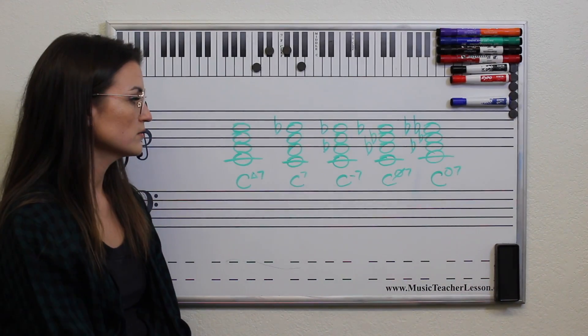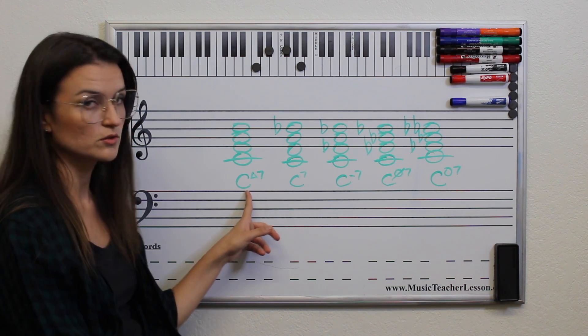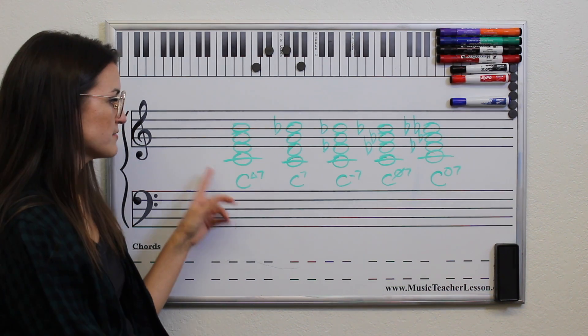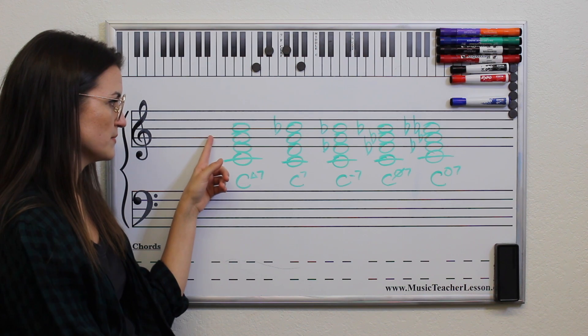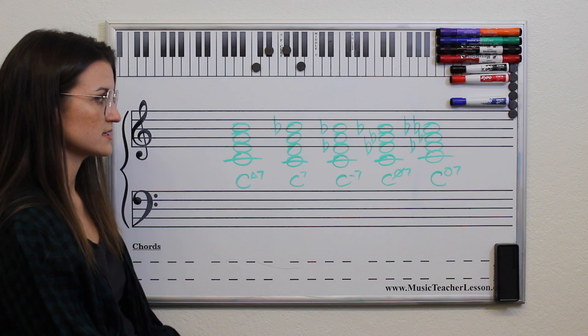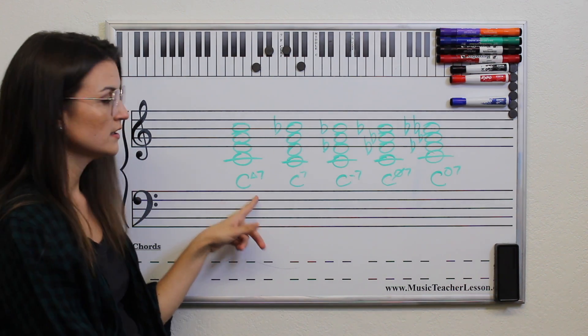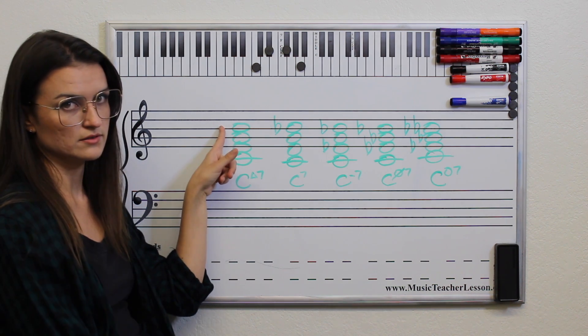Okay, so in order for you to be able to play 7th chords on any note, you have to know if the triad is major or minor or diminished, and then you have to know what the 7th is. So we can see in the C major chord, our 7th is a major 7th interval.